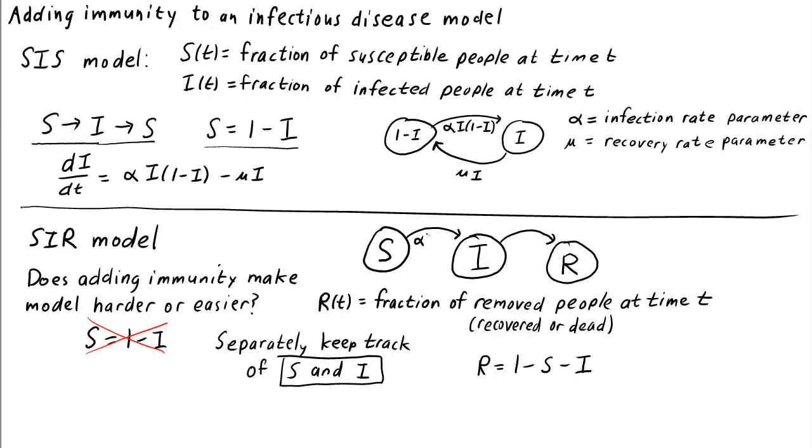Just like with the SIS model, the transition rate from susceptible to infected will be proportional to both the number of susceptibles s and the number of infectives i, where the proportionality constant is the infection rate parameter alpha. The only difference is that we cannot write the fraction of susceptibles as 1 minus i.